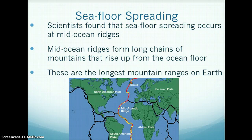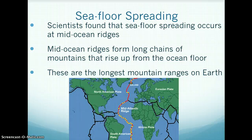Scientists found that seafloor spreading occurs at mid-ocean ridges. Mid-ocean ridges form long chains of mountains that rise up from the ocean floor — the mid-ocean ridge mountain ranges are the longest mountain ranges on Earth. Mid-ocean ridges appear where the new ocean floor forms. This image shows the mid-Atlantic ridge, which is a mid-ocean ridge.